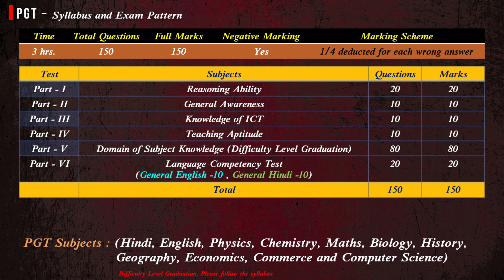There is negative marking and one-fourth mark will be deducted for each wrong answer. This paper is also divided into 6 sections: Reasoning Ability, General Awareness, Knowledge of ICT, Teaching Aptitude, Domain of Subject Knowledge, and Language Competency Test, where you have to read General English and General Hindi.